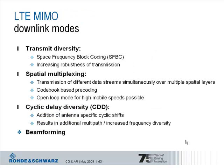This slide summarizes the MIMO modes used in the LTE downlink. Transmit diversity is one MIMO mode using a space frequency block coding scheme SFBC as an additional antenna coding. The transmit diversity mode increases the robustness of the transmission but not the data rate. The space frequency block coding scheme will be further explained in the following to give an impression of what is really done with the signal.